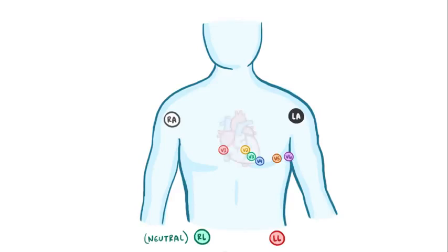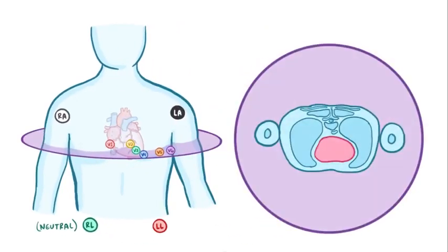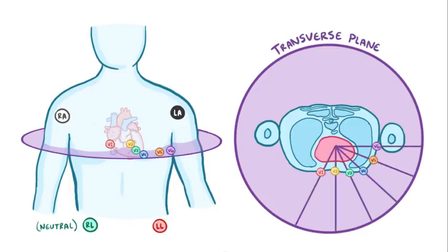Now, the heart's a three-dimensional organ, right? So V1 through V6 line up in the transverse or horizontal plane of the heart, and each electrode is set up to detect any wave of positive charge coming toward them, which based on what we know already means that they're positive. These are collectively called the chest leads.